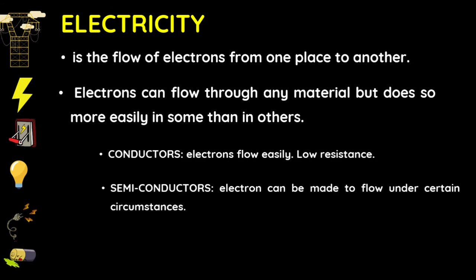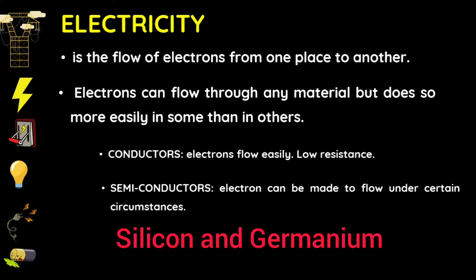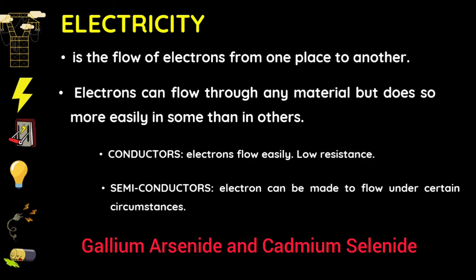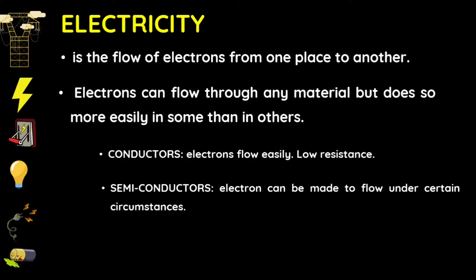Semiconductors are materials which have a conductivity between conductors and non-conductors or insulators. Semiconductors can be pure elements such as silicon or germanium, or compounds such as gallium arsenide and cadmium selenide. Semiconductors are materials wherein electrons can be made to flow under certain circumstances.